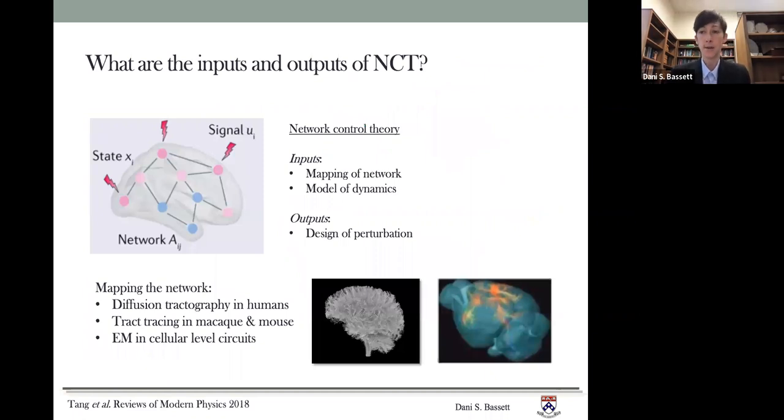So what are the inputs and the outputs of network control theory? Well, first, there are two different inputs to network control theory. The first is a map of the network, and so that would be a connectome or some sort of graph or some representation of the network that exists in the system. The second input is a model of dynamics, and we'll talk about different models of dynamics in a second. The outputs of the theory are a perturbation that has been designed to allow for some particular outcome. So let's talk about these three pieces in turn.